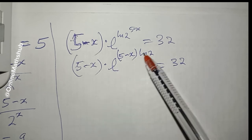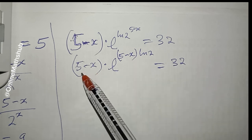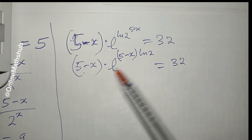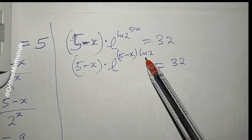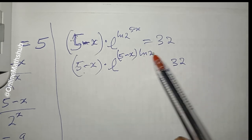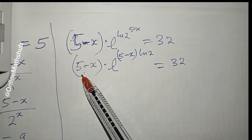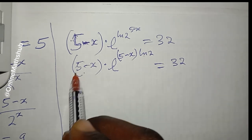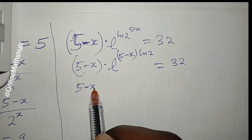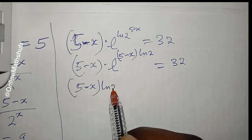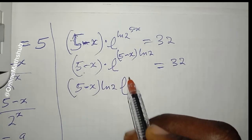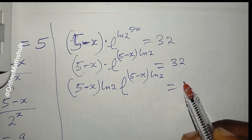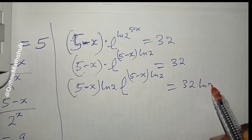To fully match the a·e^a form, we multiply both sides by ln 2. This gives (5 − x) · ln 2 · e^((5 − x) · ln 2) = 32 · ln 2. Now the expression is perfectly in the form a·e^a, where a = (5 − x) · ln 2.